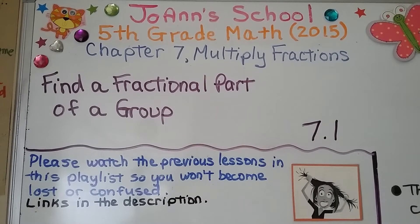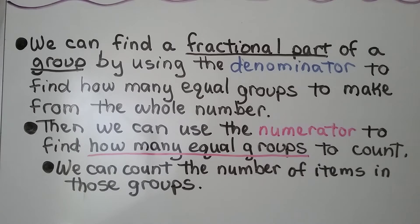New chapter about multiplying fractions. This is lesson 7.1: find a fractional part of a group. We can find a fractional part of a group by using the denominator to find how many equal groups to make from the whole number. Then we can use the numerator to find how many equal groups to count. We can count the number of items in those groups.